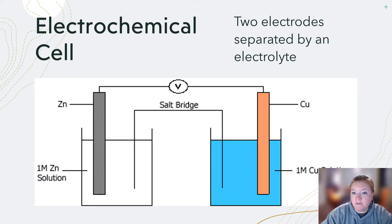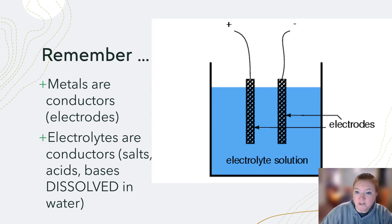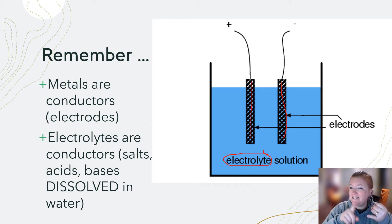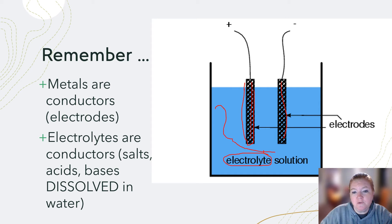An electrochemical cell is two electrodes separated by an electrolyte. Metals are conductors — that's what you use to make the electrodes. Electrolytes are also conductors: they're acids, bases, and salts dissolved in water that conduct electricity. So electricity can flow within the metal electrode, and it can also flow within the electrolyte solution.